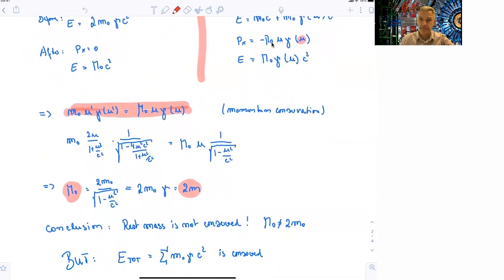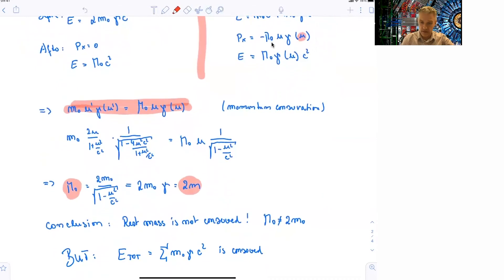So what you find is, and this is the relativistic mass, you find that as a conclusion that the rest mass is not conserved. The mass of this big ball is not simply the mass of the two rest masses or 2 times the mass of the rest mass. So you have to consider this gamma factor here. It's 2 times the relativistic mass.